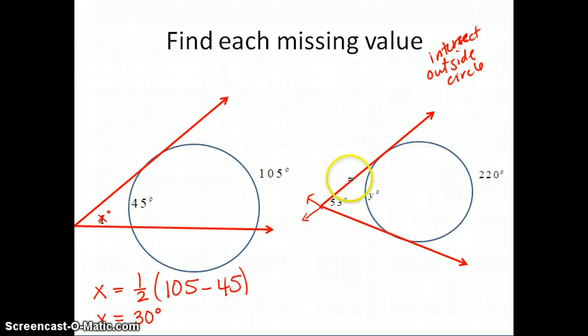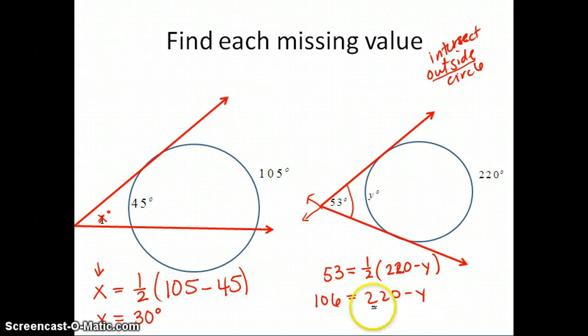For the second example, again, it's intersecting outside of the circle. Outside is really important. And the angle measure is always half of the difference. So notice that 53 is the angle measure, so it should be half of the difference of the arc measurements. Again, you'll have to use some algebra, so multiply both sides by 2 to get rid of the fraction. Then subtract your 220 from both sides. You'll get a negative 114 equals a negative y, which means positive y equals 114 degrees. So the arc measure for arc y is 114 degrees.